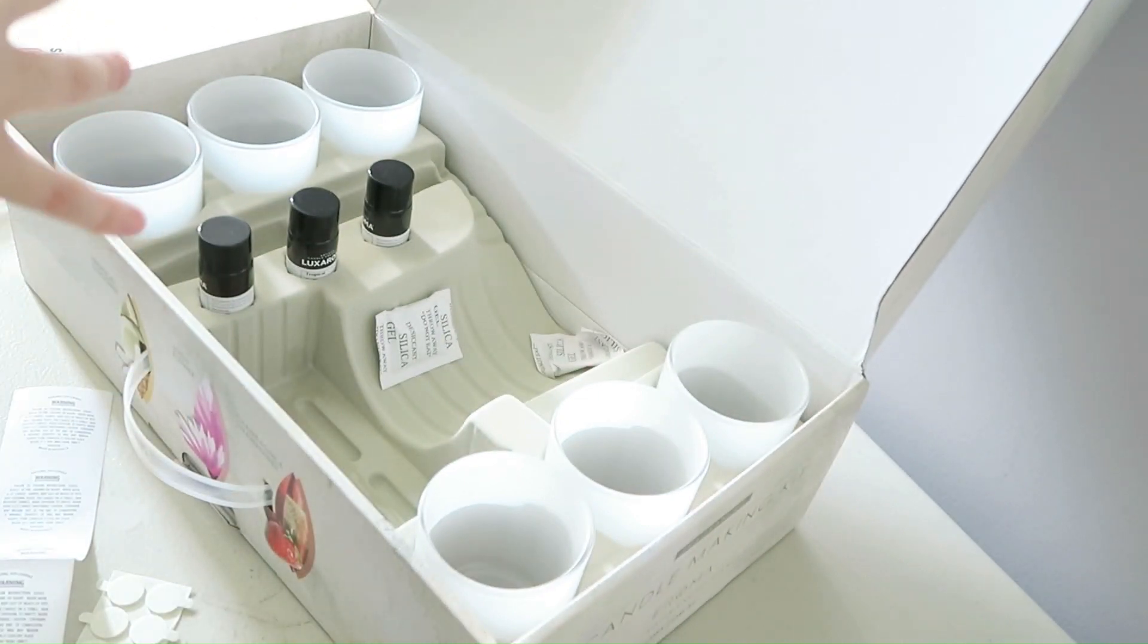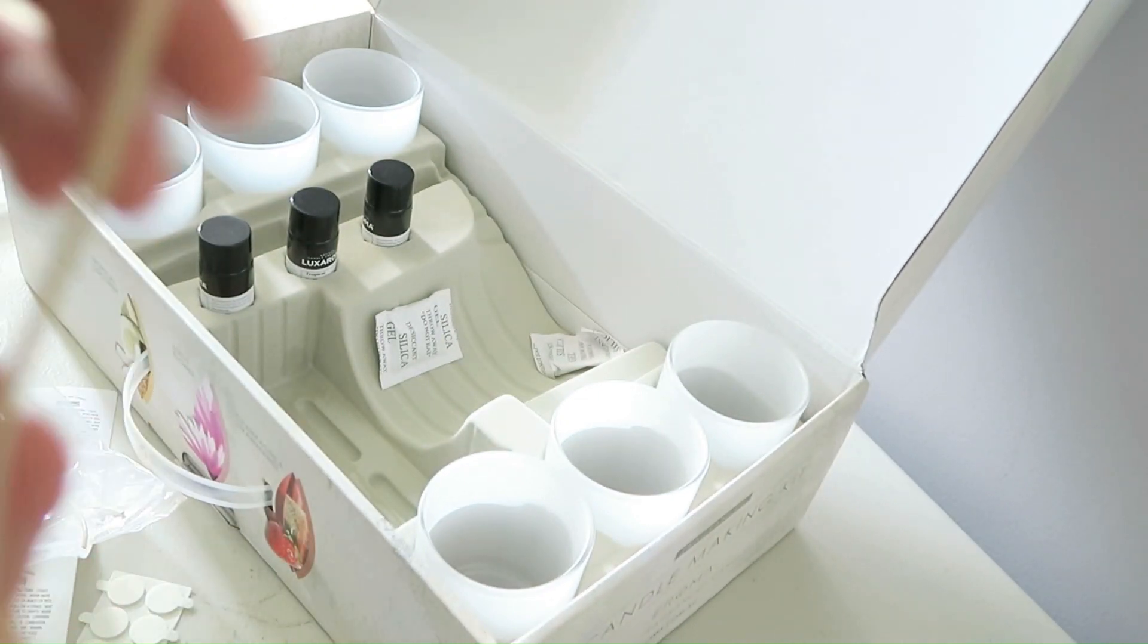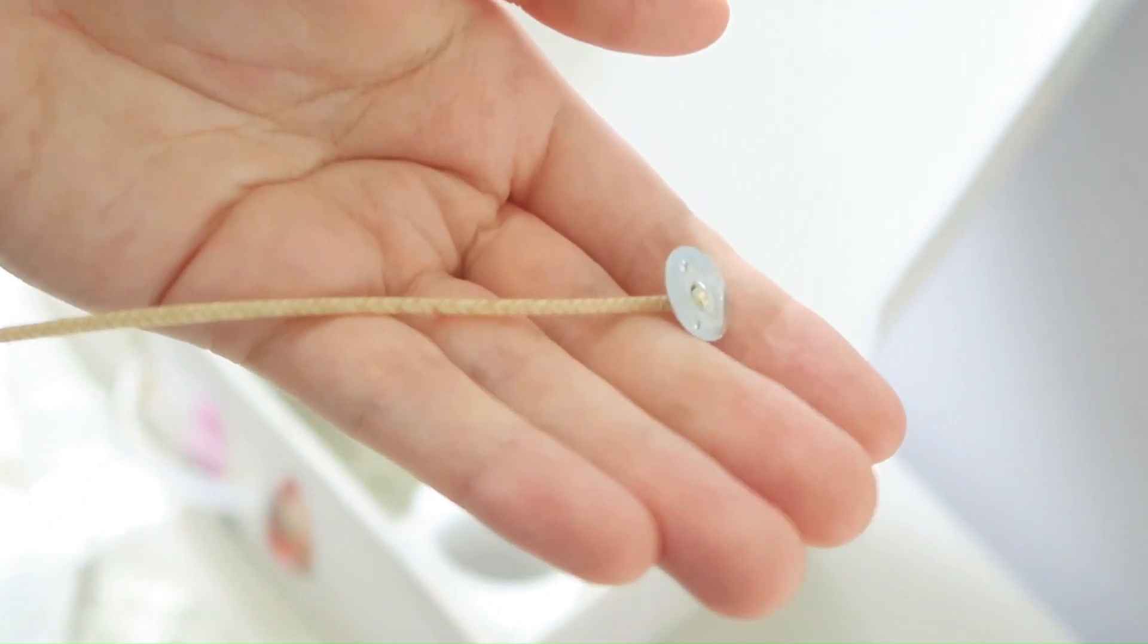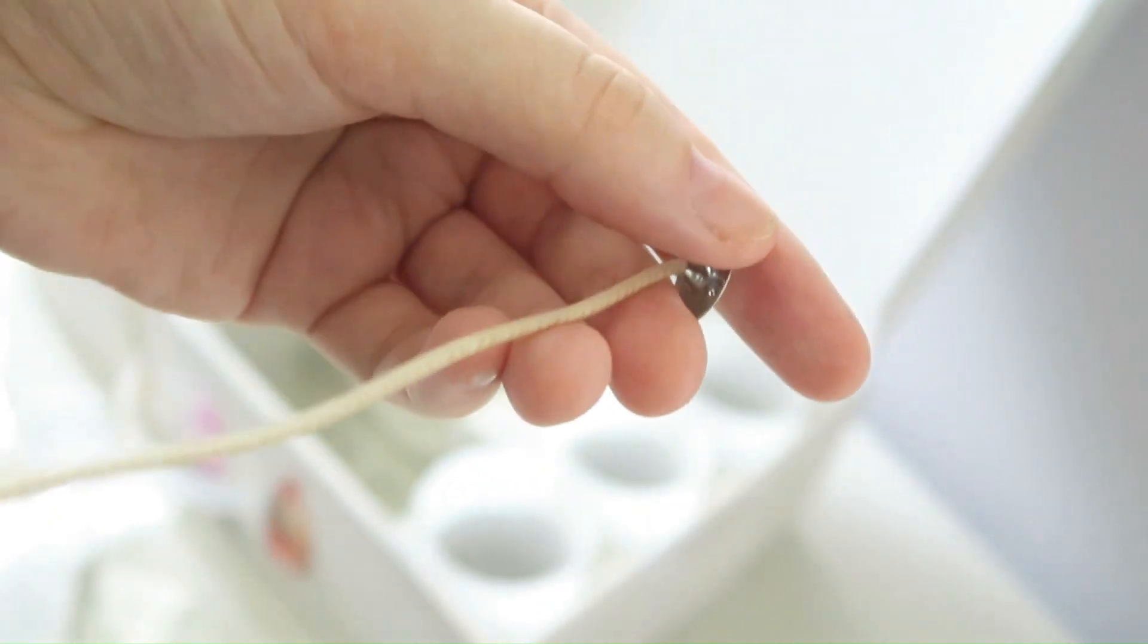And here we have the HTP 83 wicks. These are a flat braided wick.